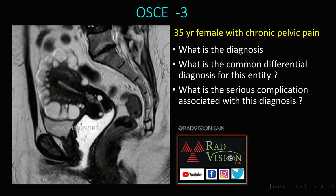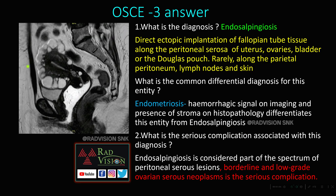Next, here you can see a 35-year-old female with chronic pelvic pain. There are multiple cystic foci scattered along the serosa of the uterus. This is classically called endosalpingiosis, which is direct ectopic implantation of fallopian tube tissue along the peritoneal serosa of the uterus, ovaries, bladder, and pouch of Douglas, and rarely around the parietal peritoneum, lymph nodes, and skin. The most common differential for endosalpingiosis is deep pelvic endometriosis or cystic endometriosis; however, in endometriosis there will be hemorrhagic signal on imaging and presence of stroma on histopathology helps in differentiation.